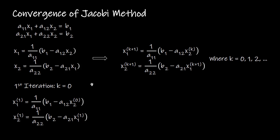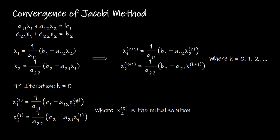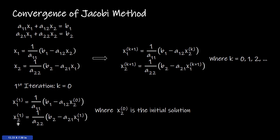When k equals 0, that is our first iteration, and we get the first approximate solution X1^(1) and X2^(1). The solution expression of X1 needs the value of X2^(0), which is called the initial solution — we take this as an initial guess. Once we have the first approximate solution of X1, we can use that value in the solution expression of X2 to get the first approximate solution of X2.